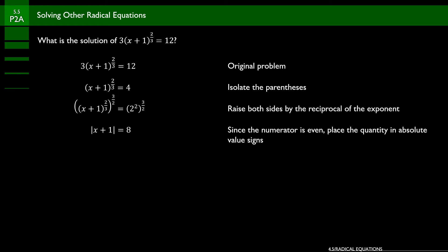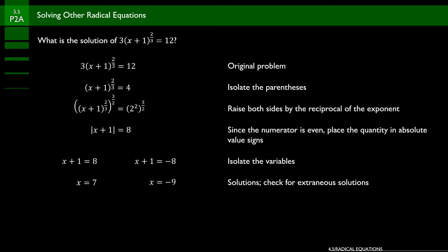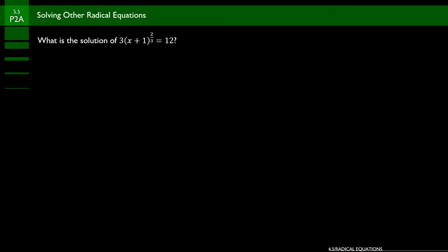So we have x plus 1 equals 8. But because the numerator of the rational exponent was even, we need to place it in absolute value signs: the absolute value of x plus 1 equals 8. When doing absolute value, we break into two separate equations: x plus 1 equals 8 and x plus 1 equals negative 8. That gives x equals 7 and x equals negative 9. Plugging both back into the original equation confirms both are correct solutions.